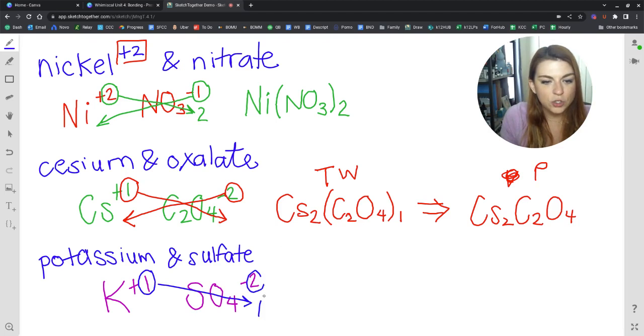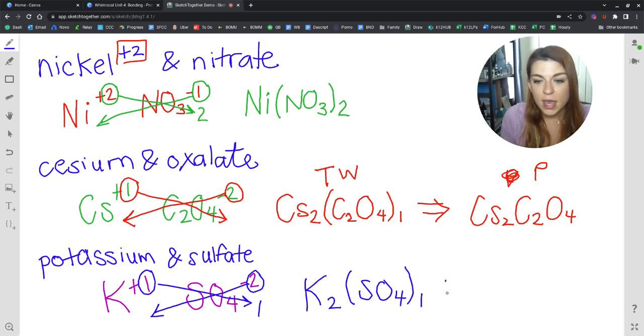We would bring a 1 all the way across the bundle behind the 4. And then we would take this 2 and crisscross it all the way across the bundle to the potassium. And we would be left with K2, again, training wheels version, SO4 with that 1 that got crisscrossed over. So that's our training wheels version. And then our full proper chemist answer would be K2SO4.